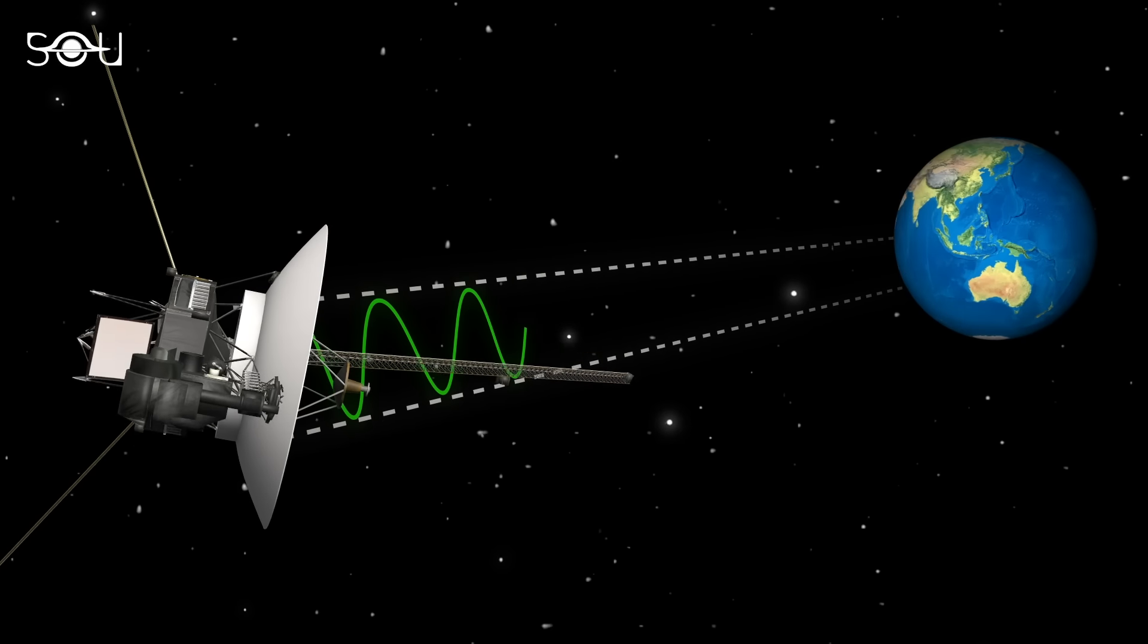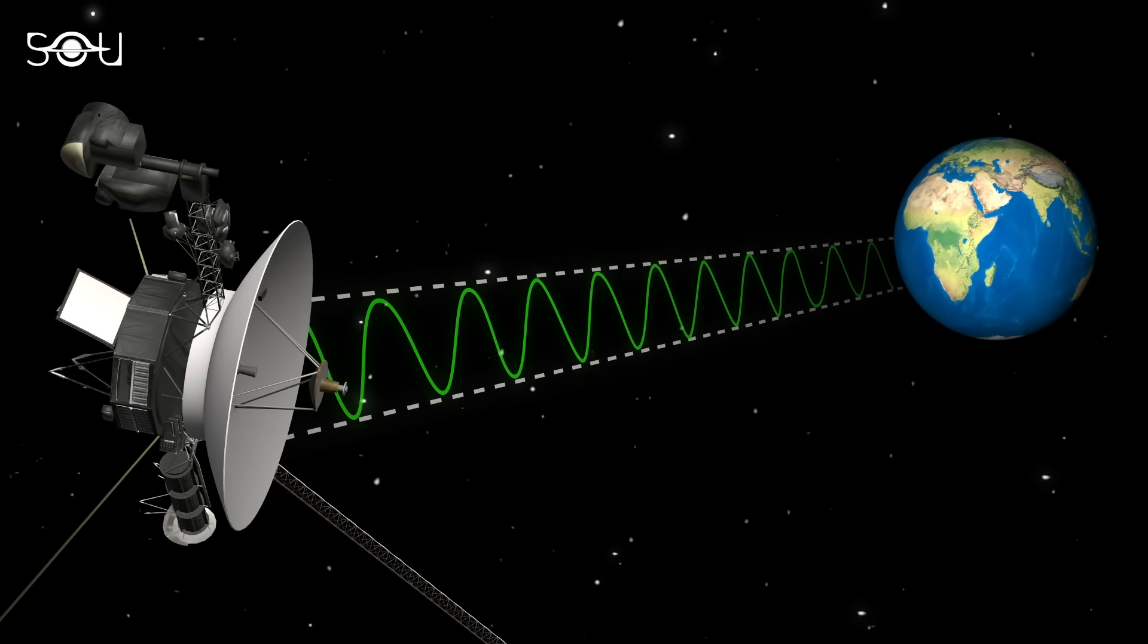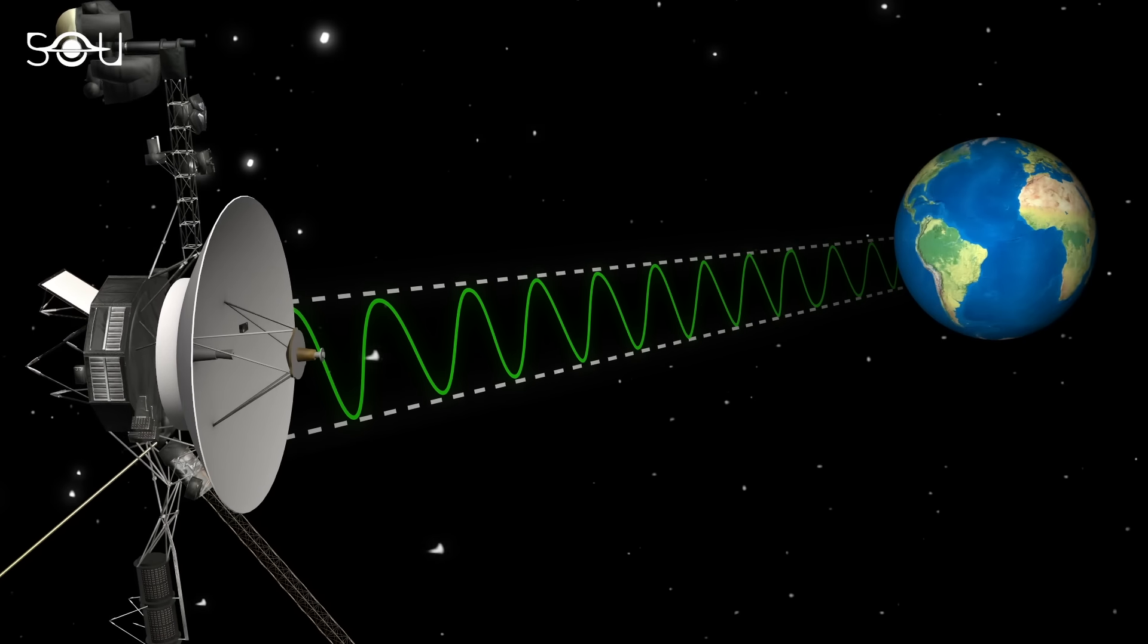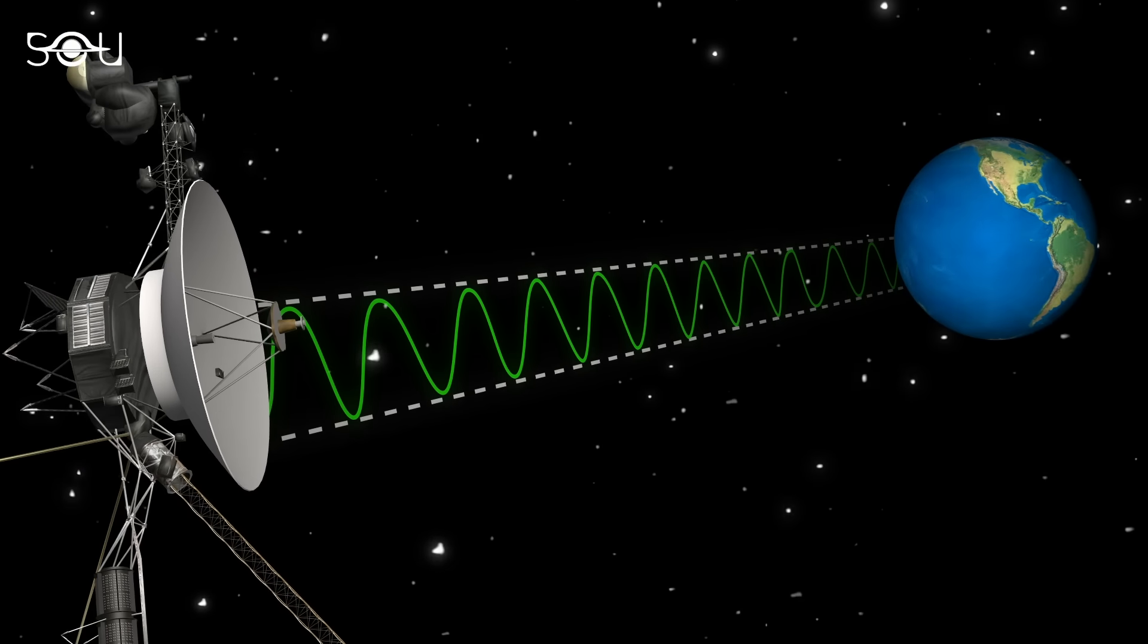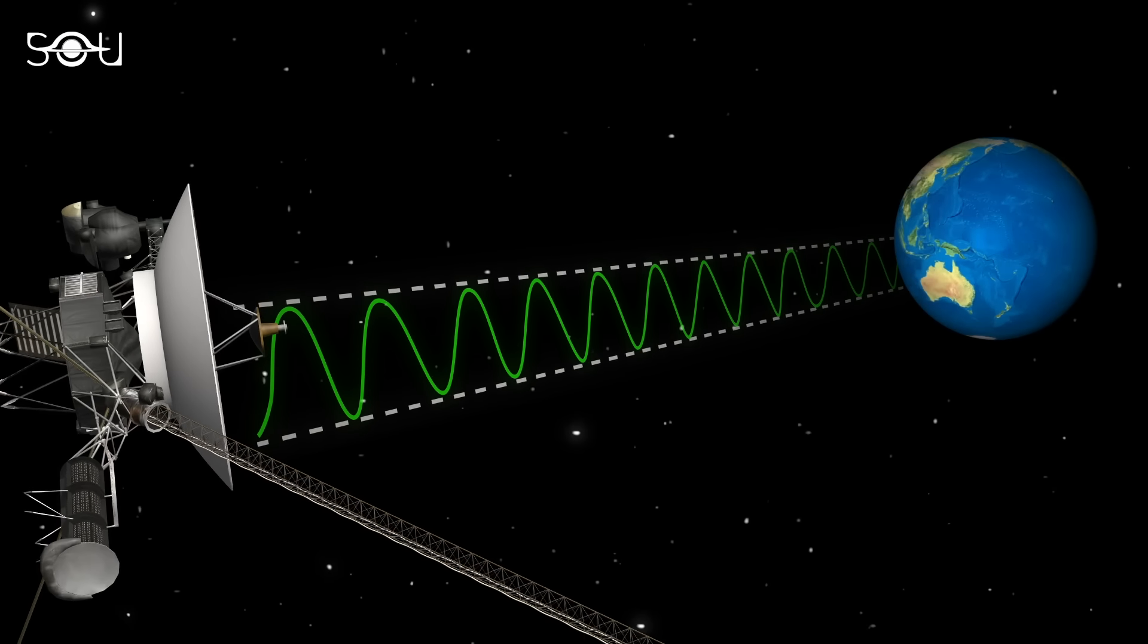However, as Voyager 1 travels further away, staying in touch gets more challenging. Signals take longer to travel, and they're much weaker by the time they reach us.